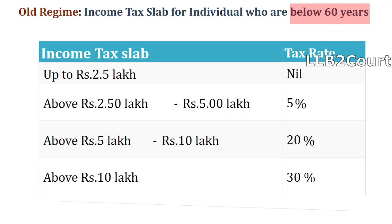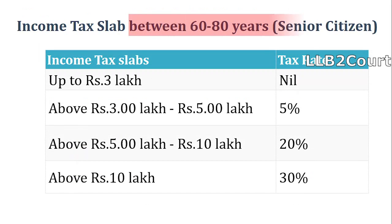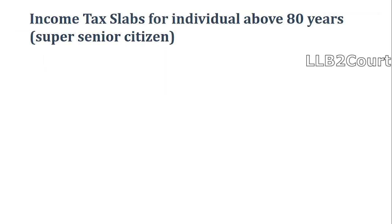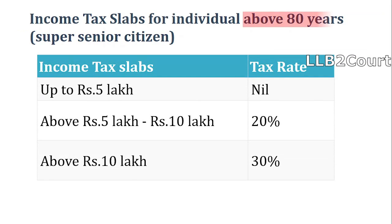This is the income tax slab rate applicable for the old tax regime. For individuals below 60 years: income up to rupees 2.5 lakh is nil, above 2.5 to 5 lakh is 5%, 5 lakh to 10 lakh is 20%, and above 10 lakh is 30%. For senior citizens between 60 to 80 years: up to rupees 3 lakh is nil, 3 lakh to 5 lakh is 5%, 5 lakh to 10 lakh is 20%, and above 10 lakh is 30%.